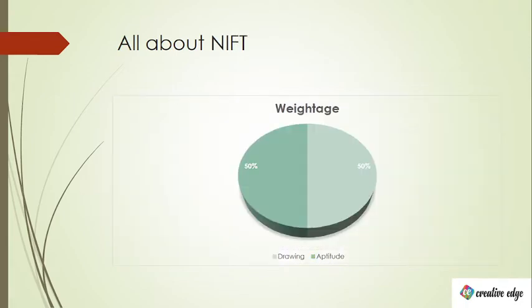In NIFT, the weightage carried by aptitude is 50%, and scoring well in the aptitude has a lot to do with your score as well as rank. In NIFT the aptitude questions are from subjects such as quantitative aptitude, logical ability, verbal ability, current affairs and general awareness.